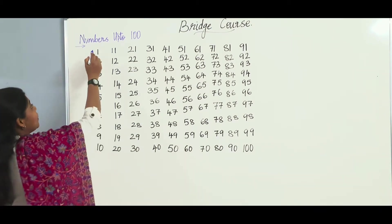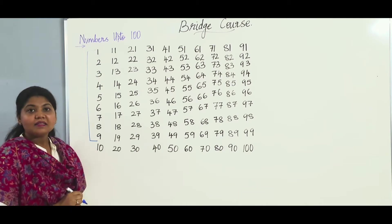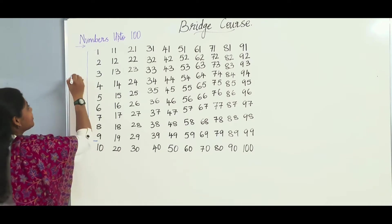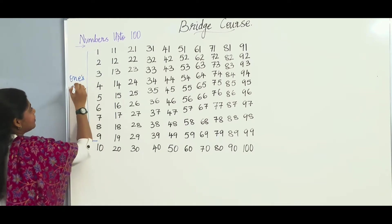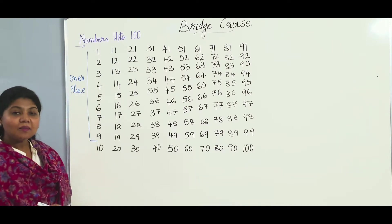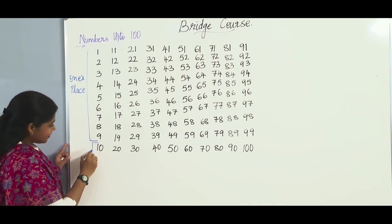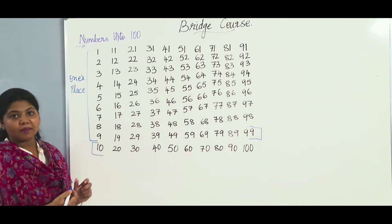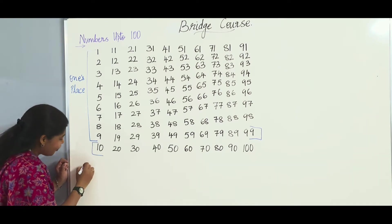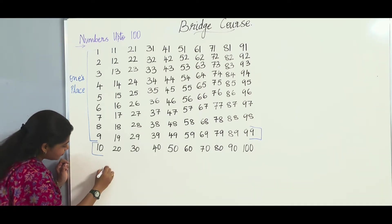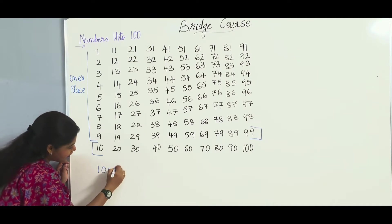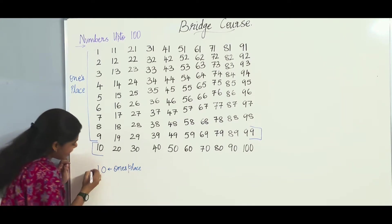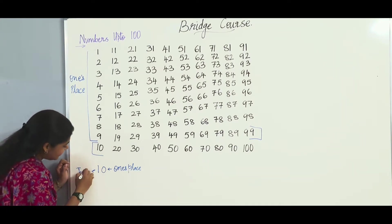Numbers from 1 to 9 are single digit numbers. They fall in the 1's place. Numbers from 10 to 99 are 2-digit numbers. These numbers fall in 2 places: the 1's place and the 10's place.